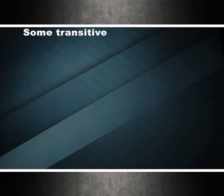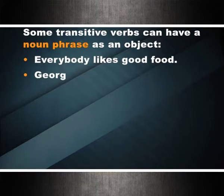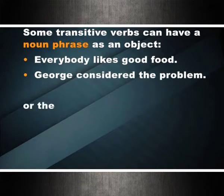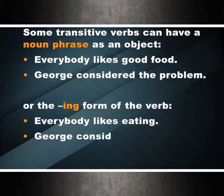Some transitive verbs can have a noun phrase as an object — for example, everybody likes good food; George considered the problem. They can also take the -ing form of the verb: everybody likes eating; George considered starting again. Some verbs have the pattern N + V + to + infinitive. Examples: they agreed to help; we decided to go. Some verbs follow the pattern N + V + N + to + infinitive: she told him to go home; they advised us to wait.